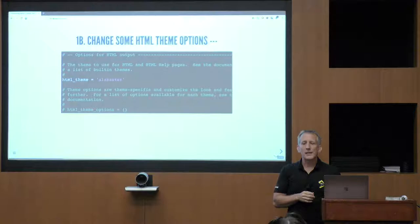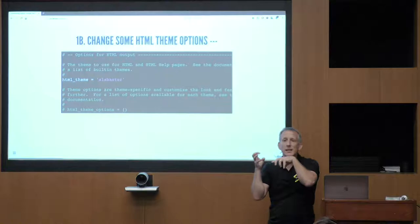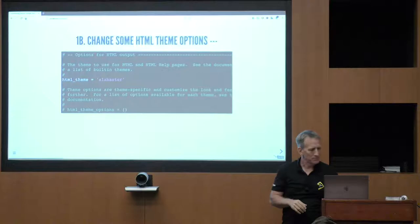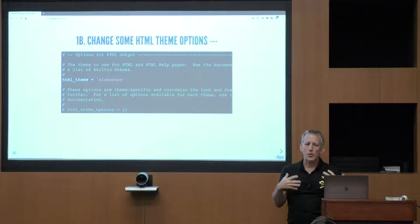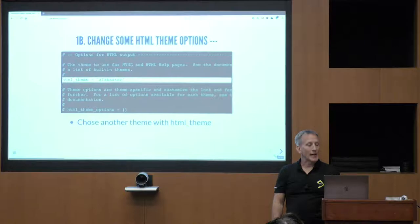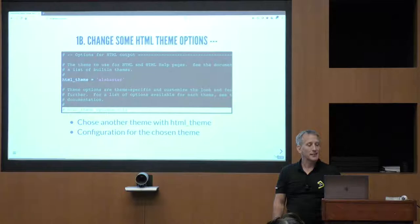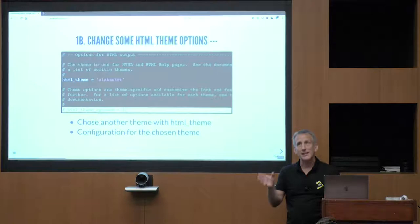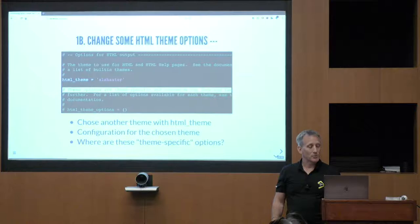Sphinx has multiple ways it can generate output. Same documentation can go to HTML, PDF, EPUB, or man pages. HTML has some special machinery — a concept called theming — and you can supply extra values that are only applicable when you're building HTML. For example, the default theme is something called Alabaster. You can change it, or go change the HTML theme options dictionary in your config file to feed values to that theme. Those options are theme-specific and customized for look and feel.